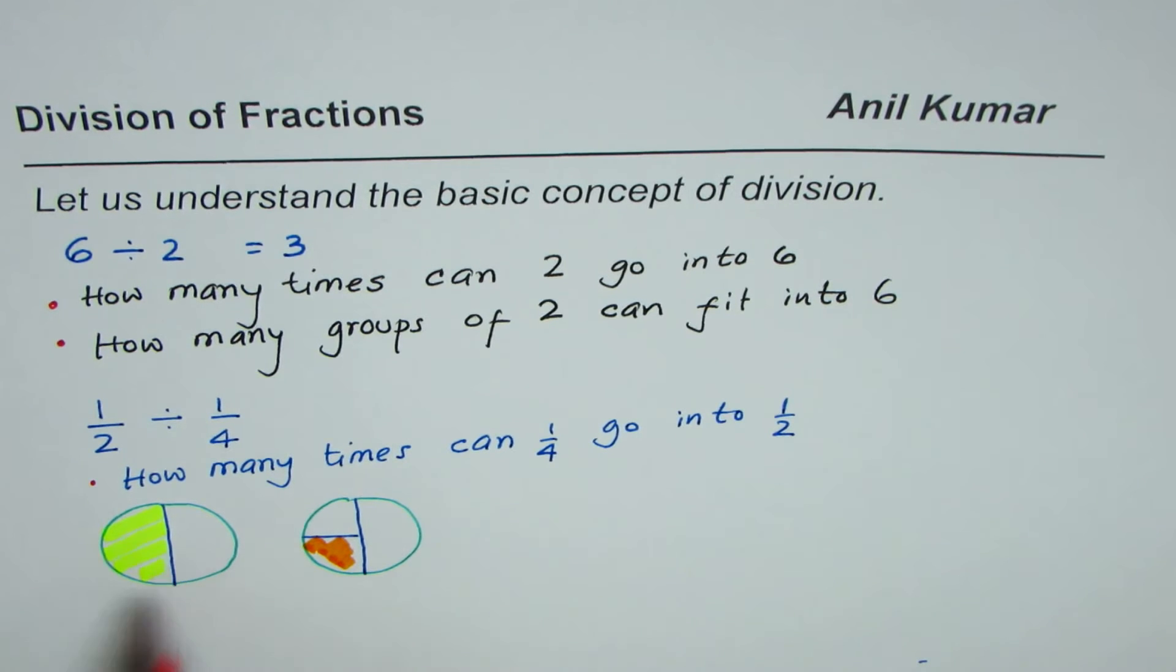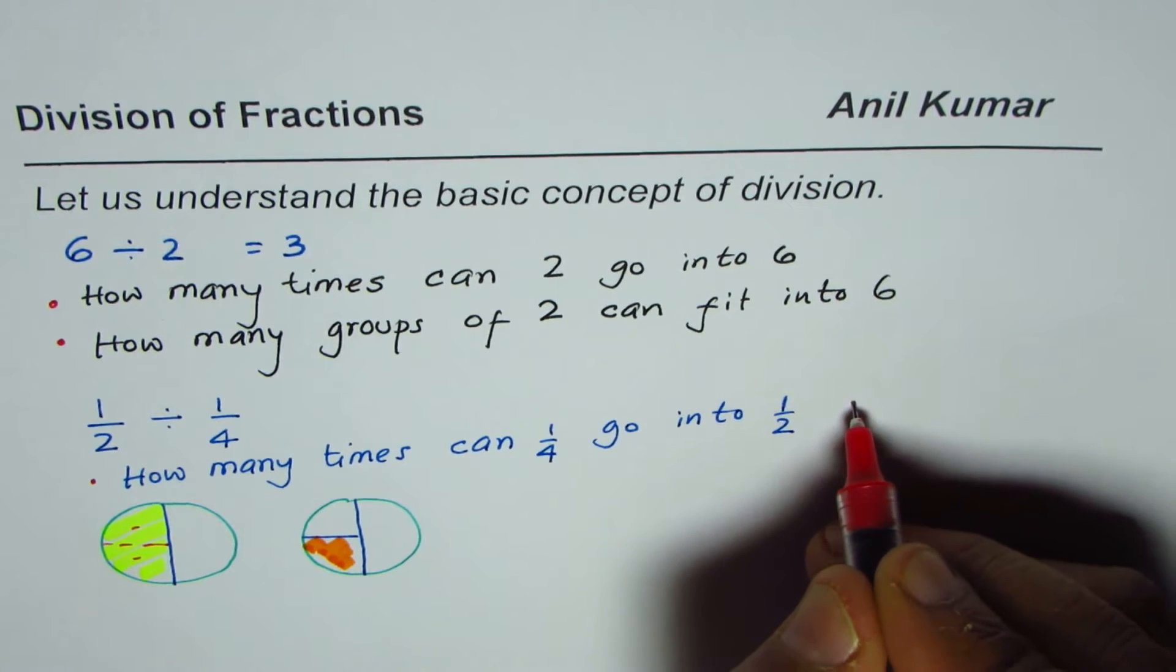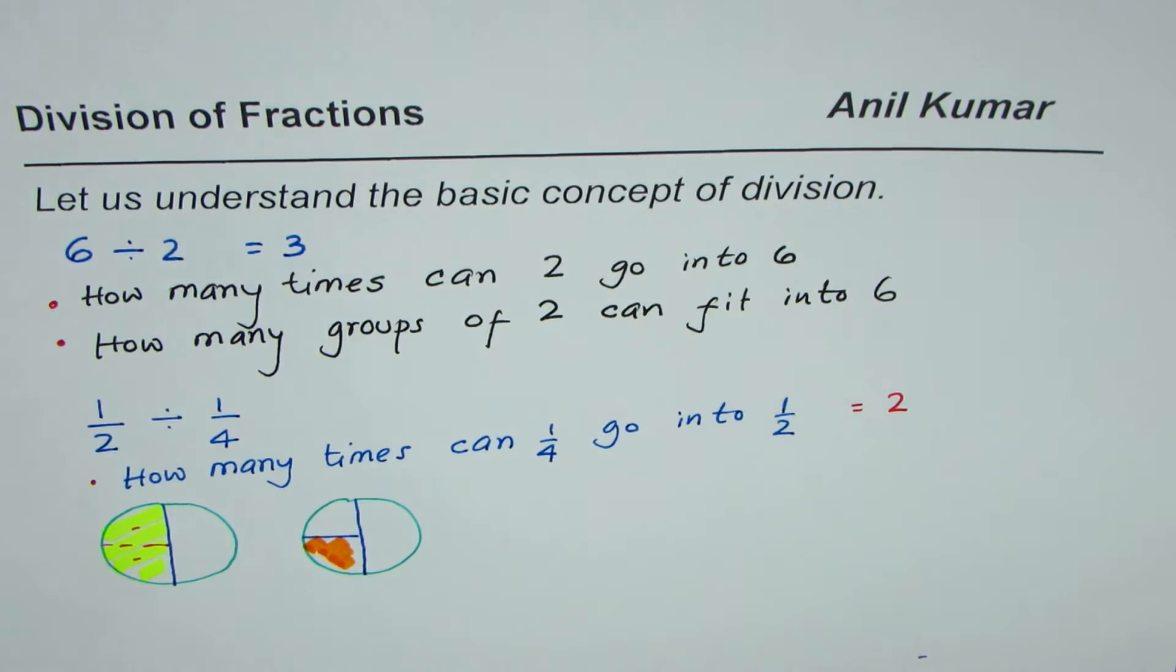From here, it is very clear that 1 fourth could fit 2 times. So, 1 fourth of this pizza can fit 2 times here. And therefore, we can say half divided by 1 fourth is equal to 2. Do you see that?